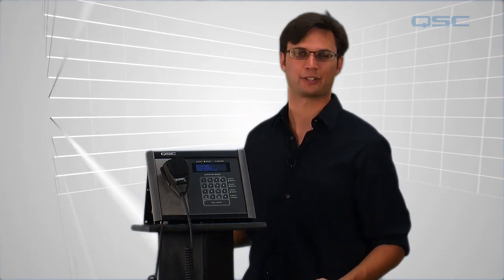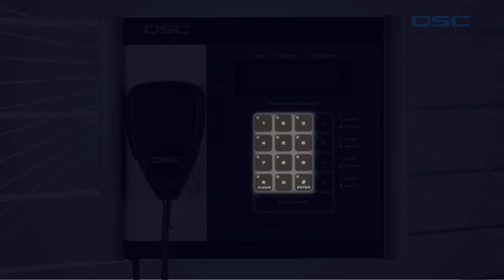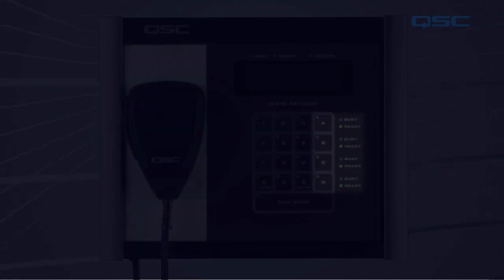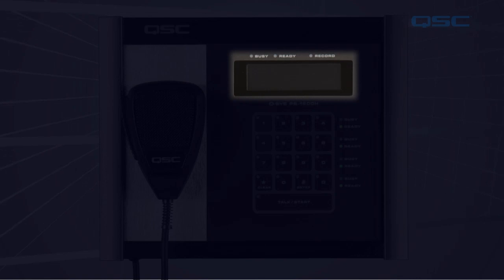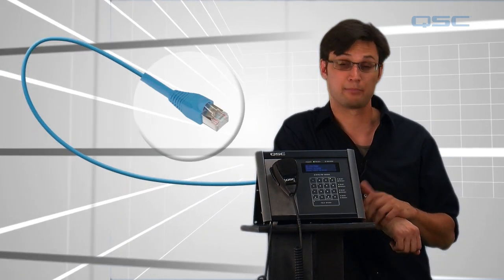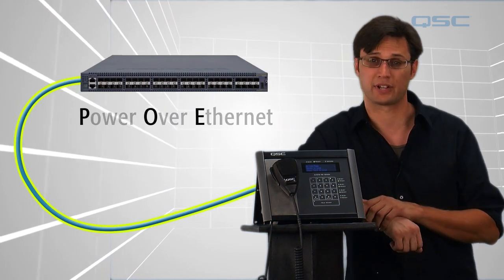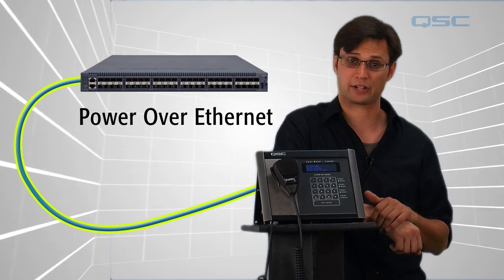Let's start with the hardware. QSC has a few different models of page station. This is the PS1600H. It has a 12-button keypad, a handheld microphone, four customizable command buttons, and an LED screen at the top for basic information. Different models have different button layouts or a gooseneck microphone. Page stations are connected to Q-SYS with a basic Cat5 cable, but you'll need to connect it to a switch that is PoE capable — that's power over Ethernet — or you could use a PoE injector.